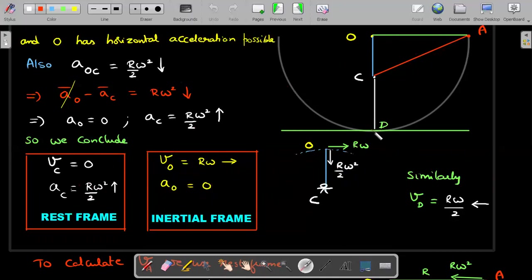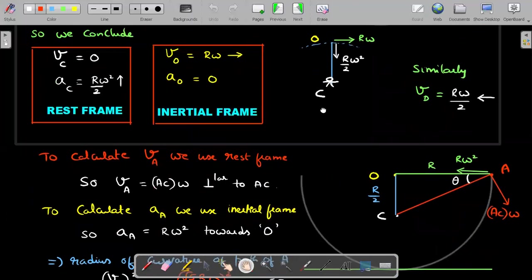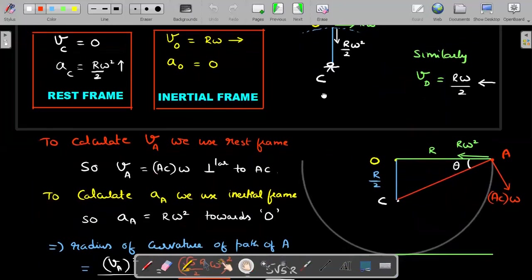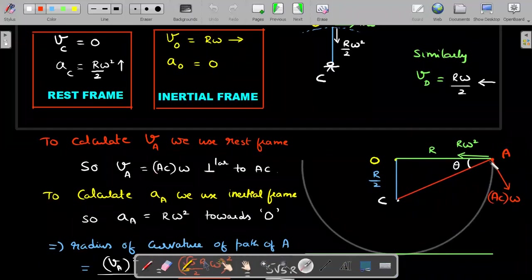So I conclude, A's velocity I'll sit on C and find out. A's acceleration, I'll sit on O and find out because it's an inertial frame. Same thing I'll use for D also. In the options, he's talking about velocity of point D. So velocity of point D, what's the best place to sit and watch? Center of mass because its velocity is zero. So you sit on center of mass. And if this is turning in clockwise sense, he will think that this particular D point is moving towards left with velocity of R omega by 2. So we found one of the options.